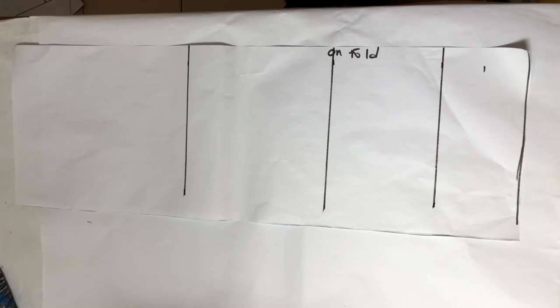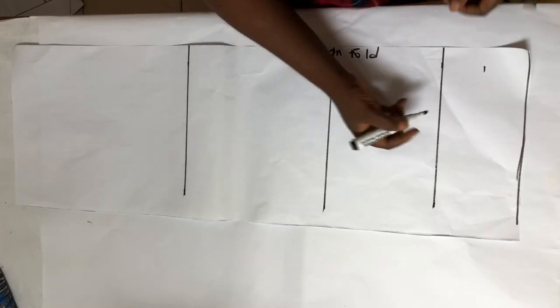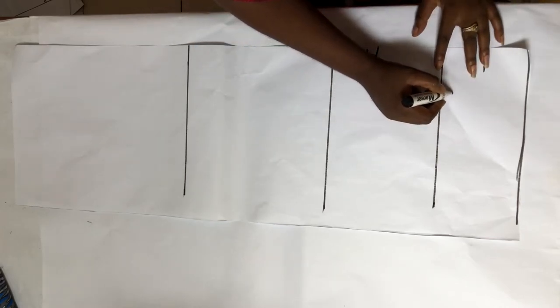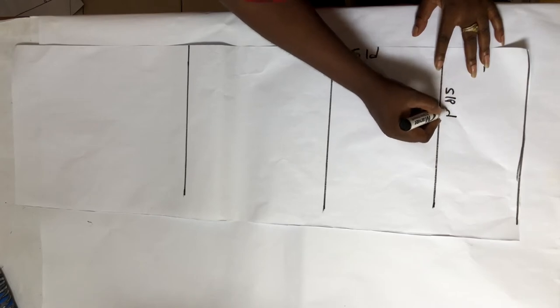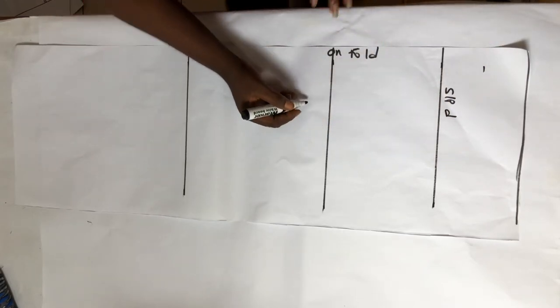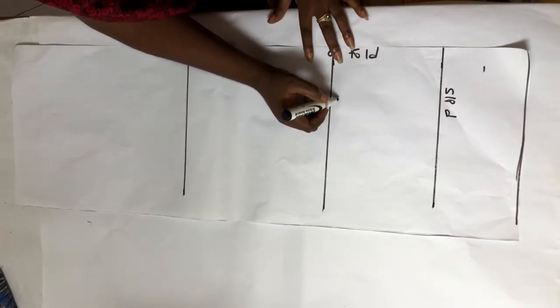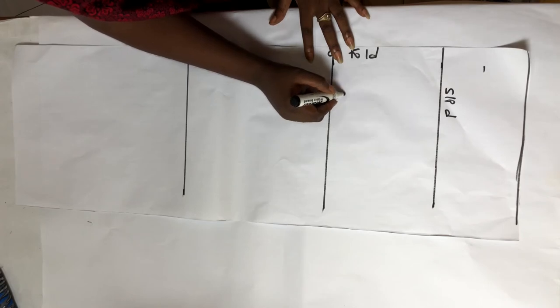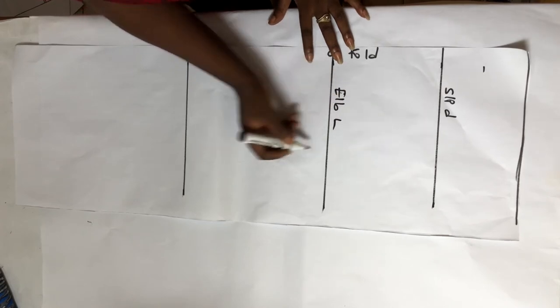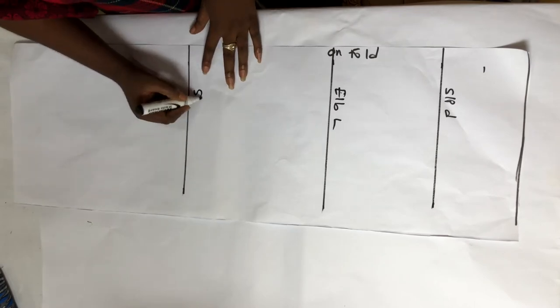The next thing I'm going to do is to label my lines. This is the slope depth line. This is my elbow length line and this is my sleeve length line.